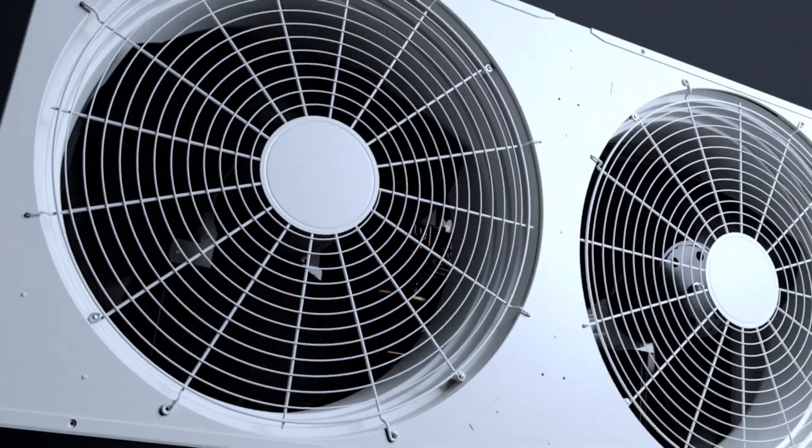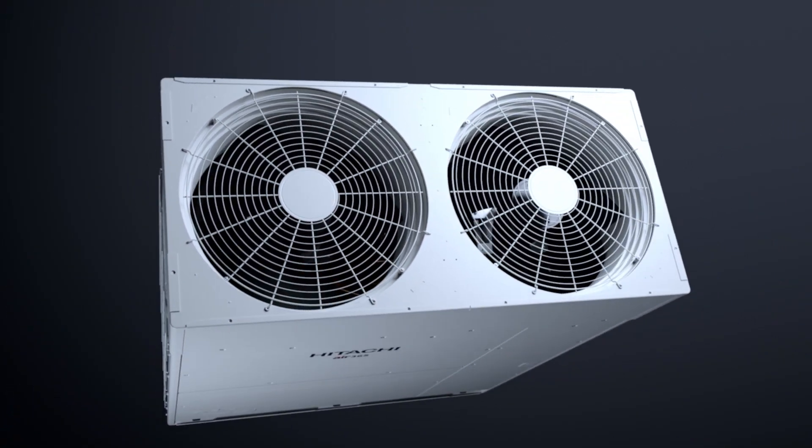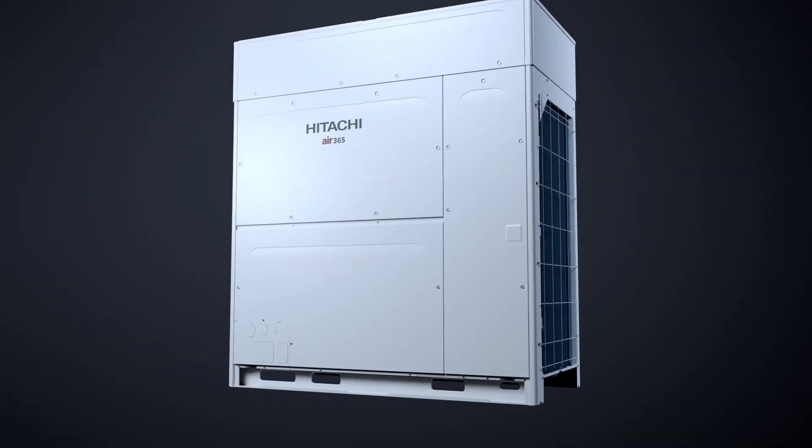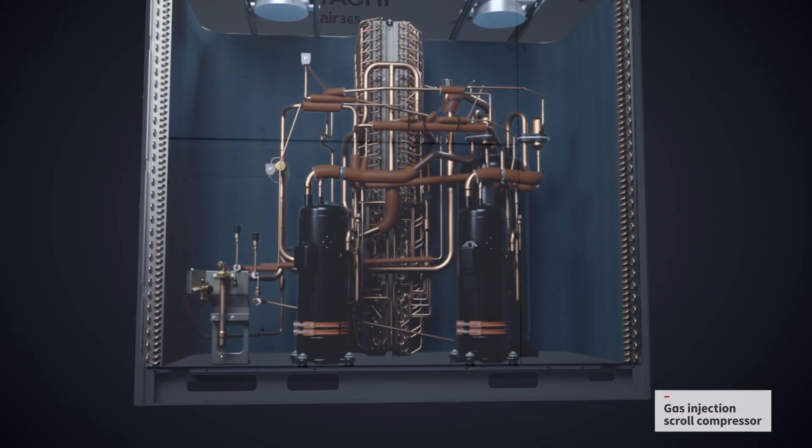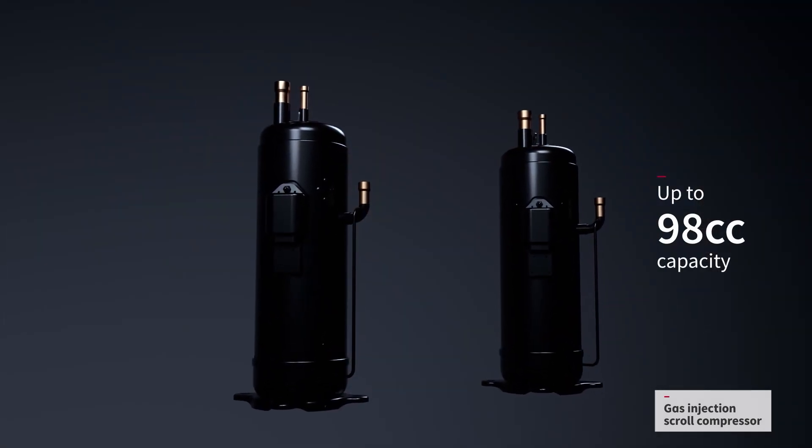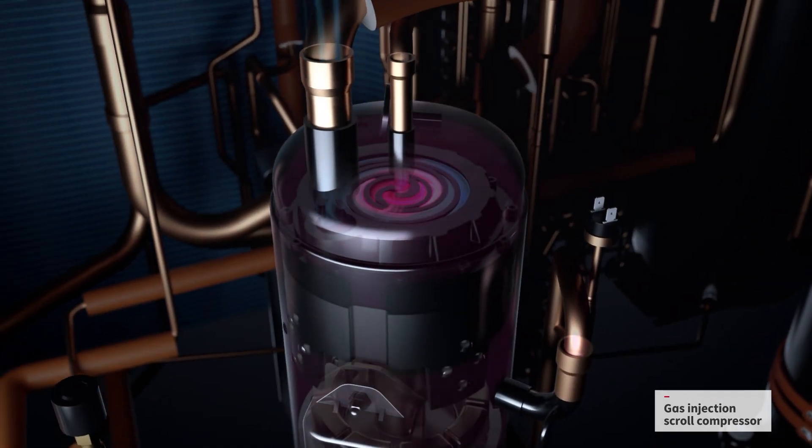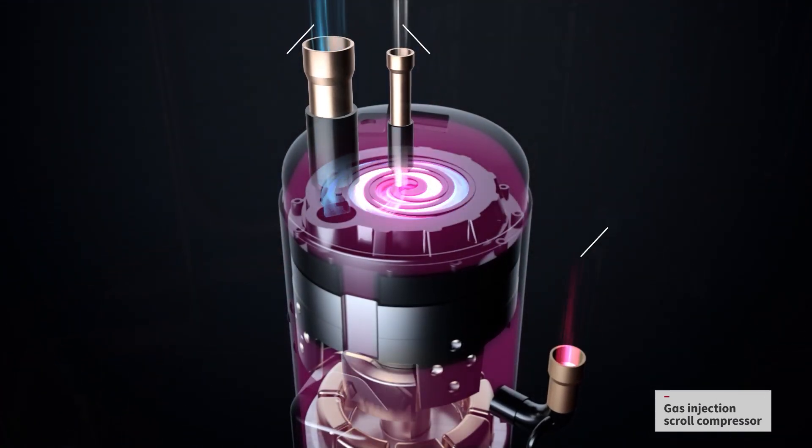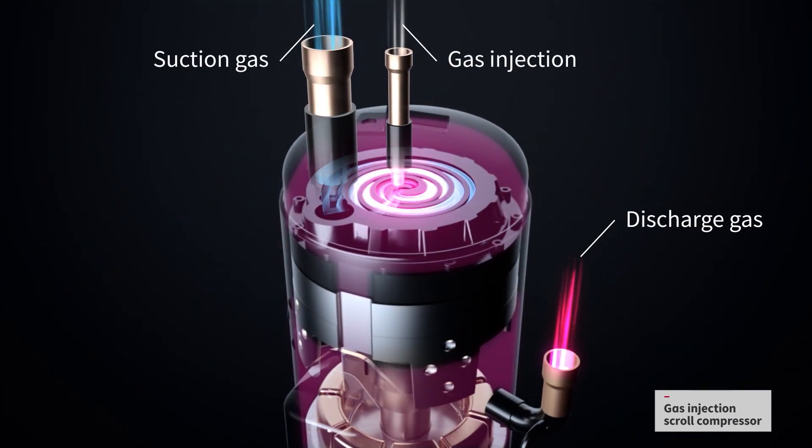First, let's follow the refrigerant flow. A large capacity gas injection scroll compressor is used in every AIR365 MAX unit, contributing to greater energy efficiency and operation across a wider temperature range.